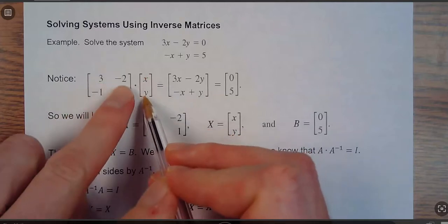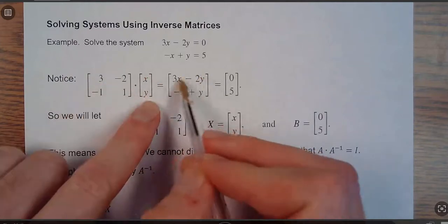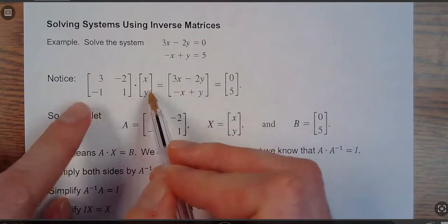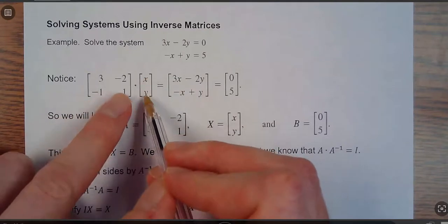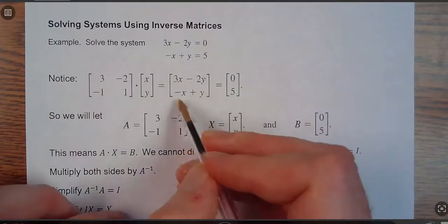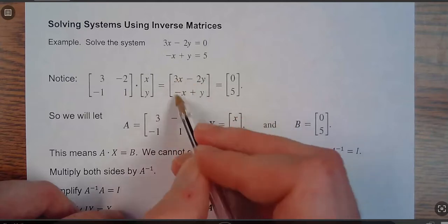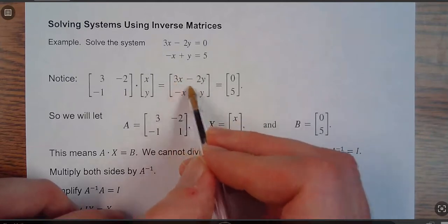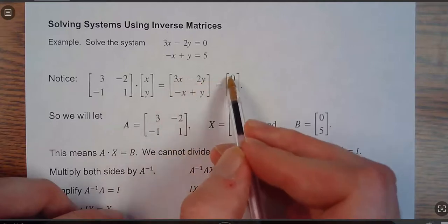If I took 3 times x minus 2 times y, that goes on top, which is one number, one expression, and then negative x plus y, that goes down here. You can't combine them because they're not like terms, but that would be one entire unit, and that would be one entire term.